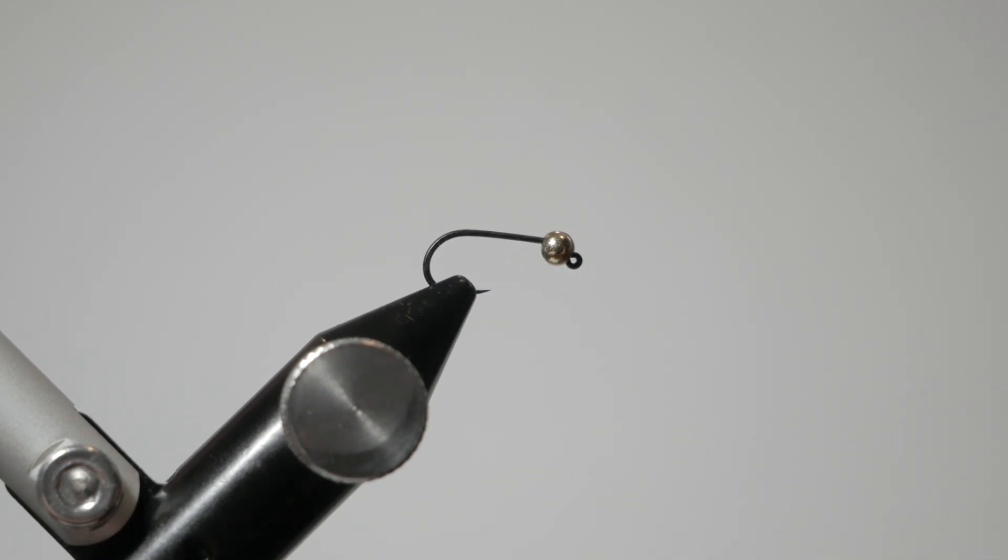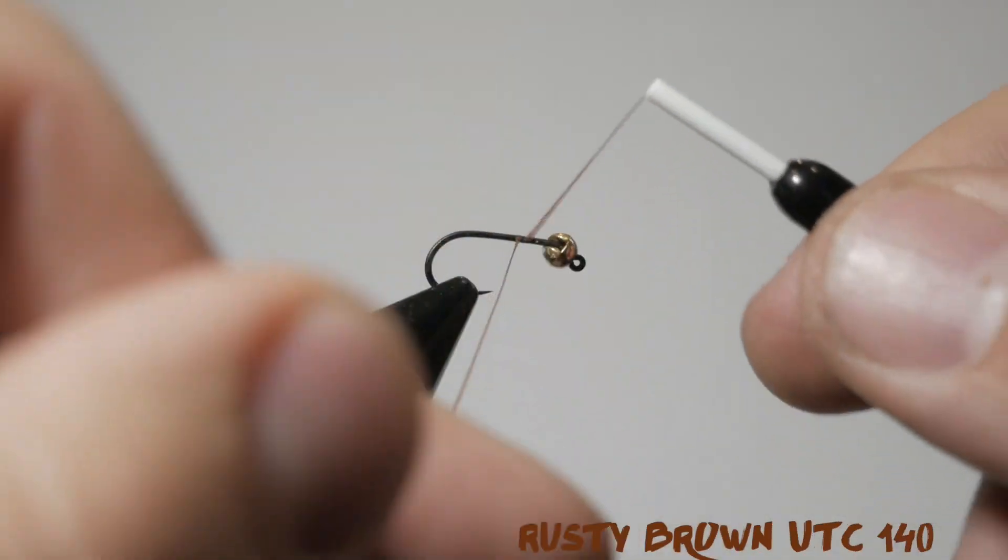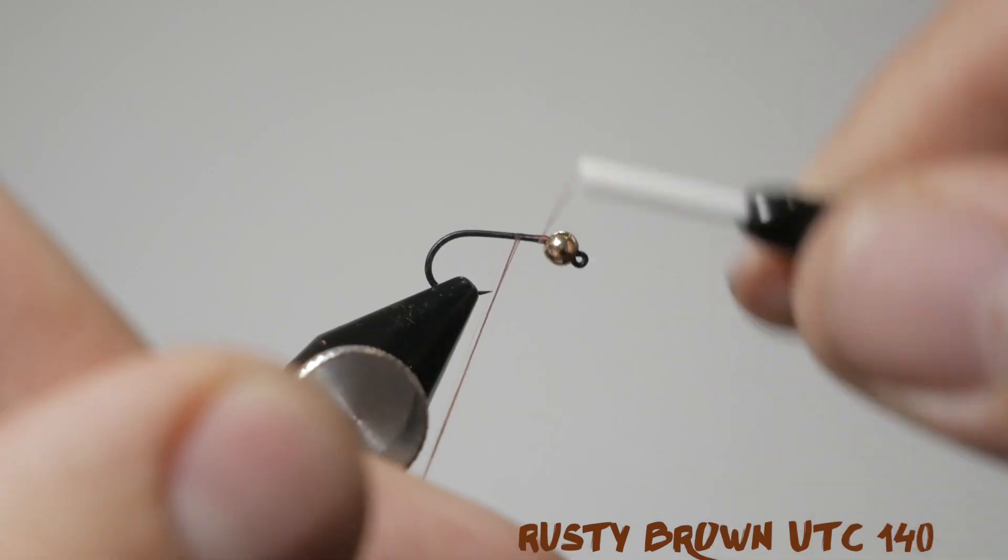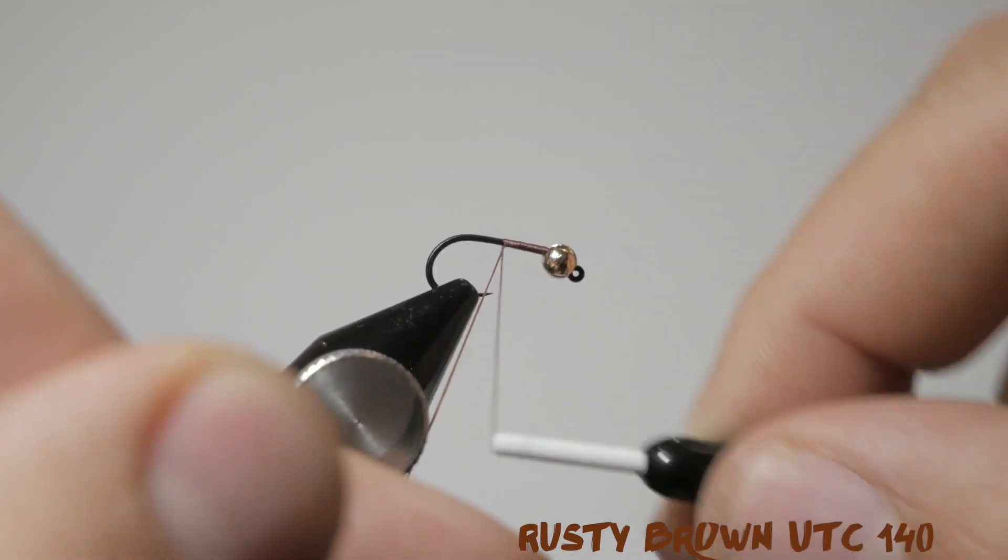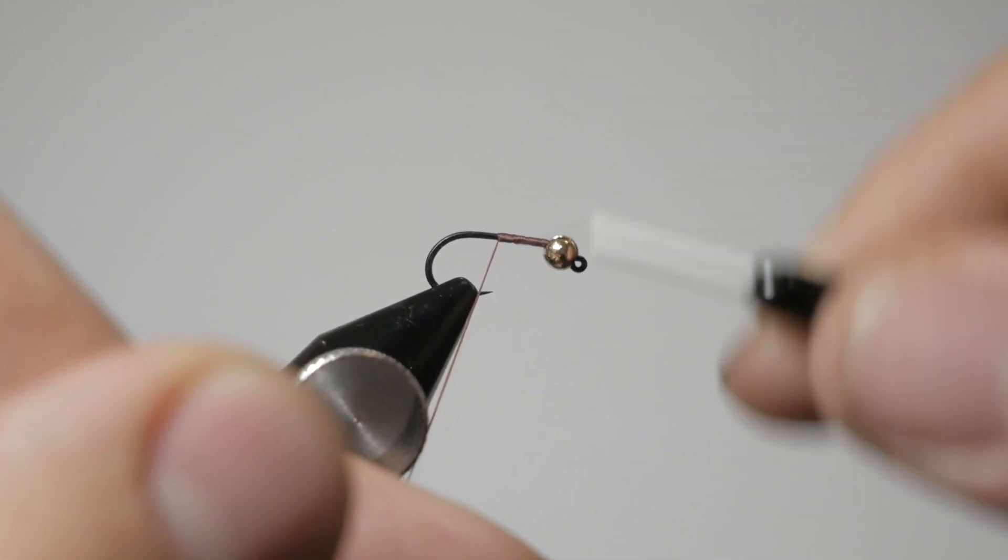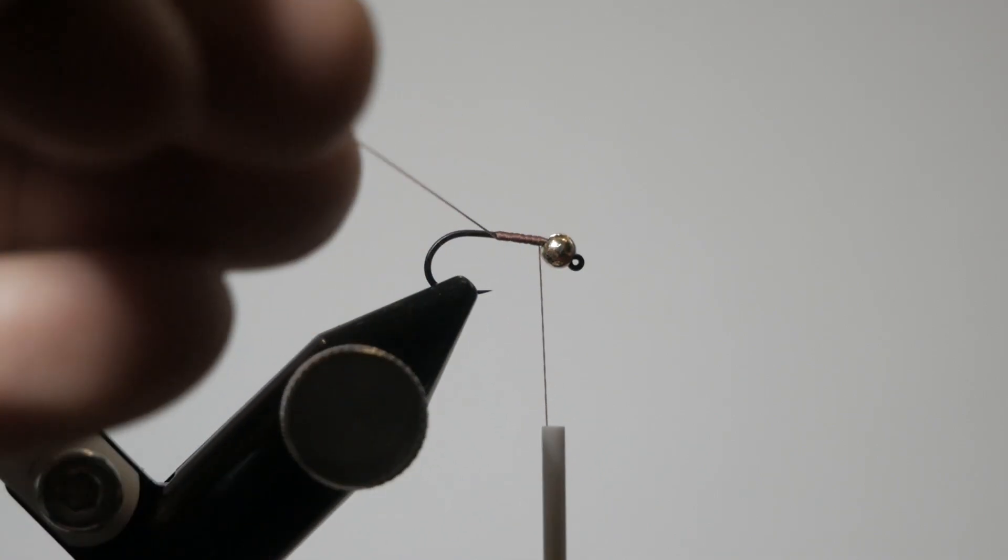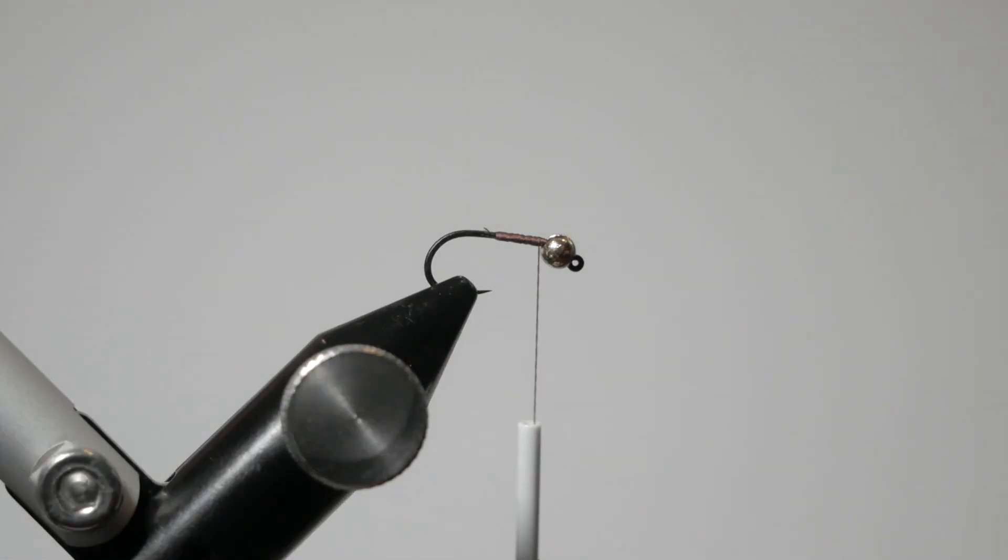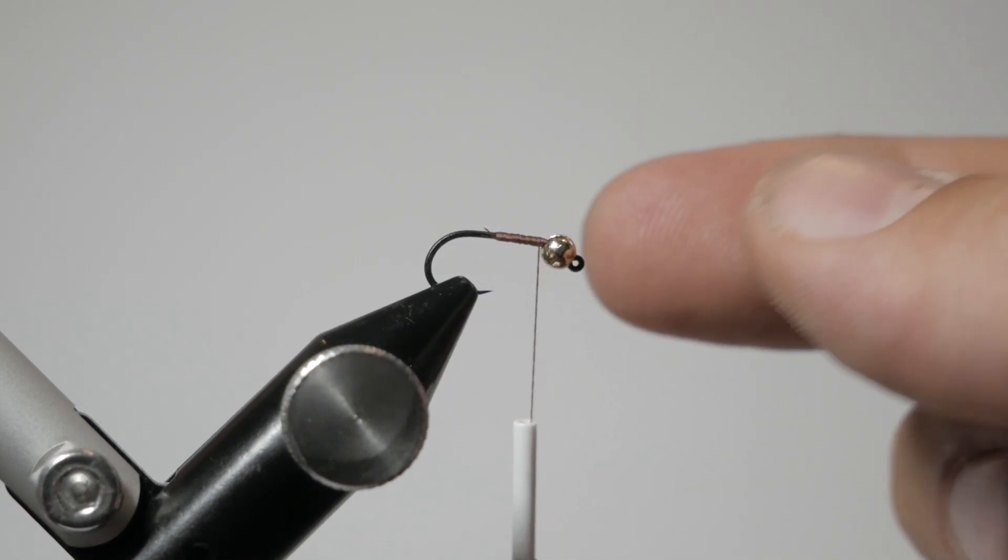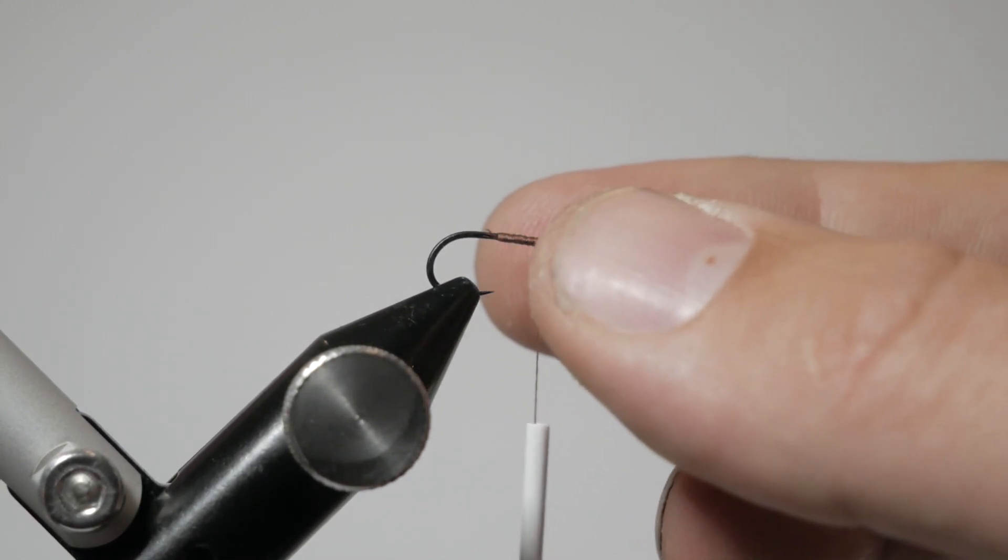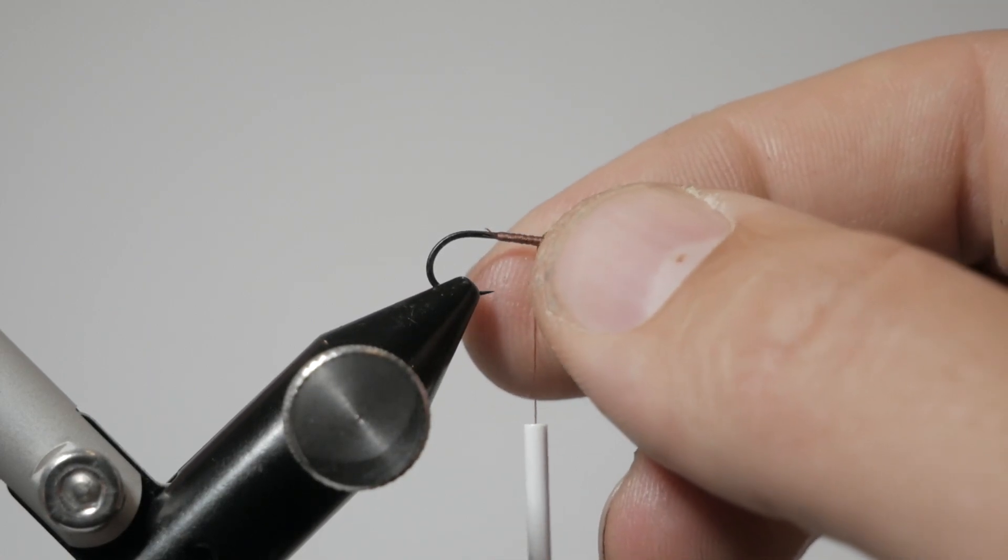What we're going to do to get started is we're going to use a rusty brown UTC thread. This is the exact same color that Tim uses and the creator of the fly, Yuk, uses. So what we're going to do is we are just going to go about halfway down the fly, tie that thread on there, cut it off close. Now is where we're going to reposition our bead - it's going to move a little bit as you're tying. I'm going to get that slot and move it to the bottom of the fly.